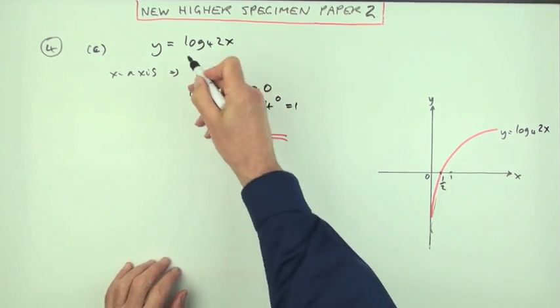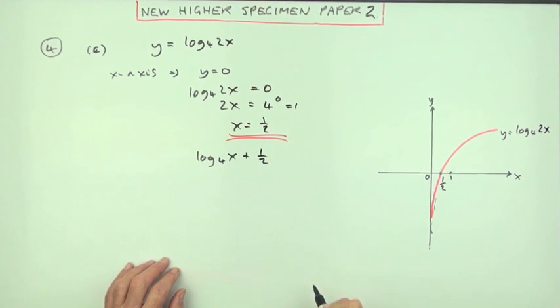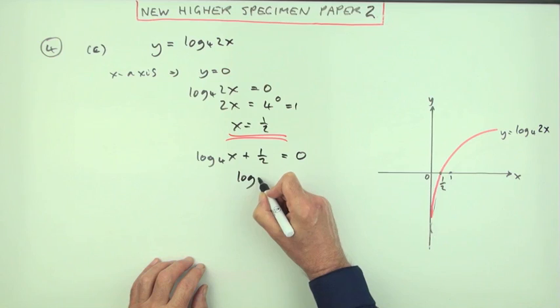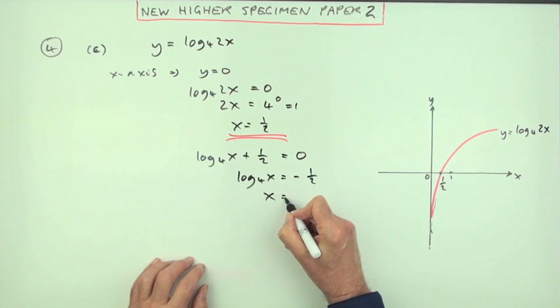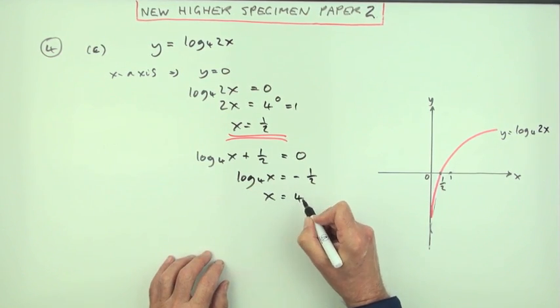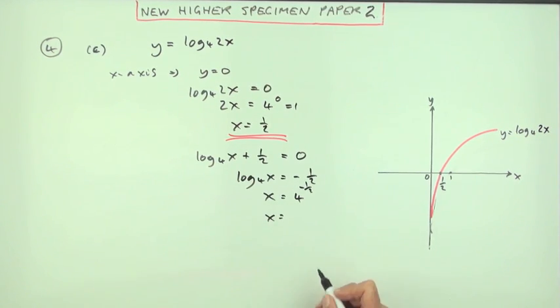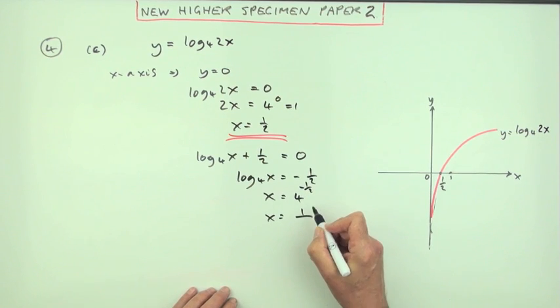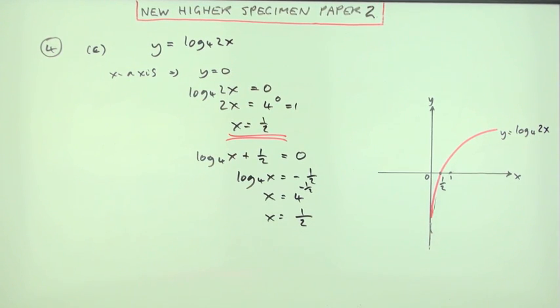Or you could have used the altered form: log base 4 of x plus a half. What happens when that equals 0? That means log base 4 of x will equal negative a half. So x will be 4 to the power negative a half. What's 4 to the power negative a half? The negative power means 1 over root. Square root of 4 is 2. Same answer: x is a half.